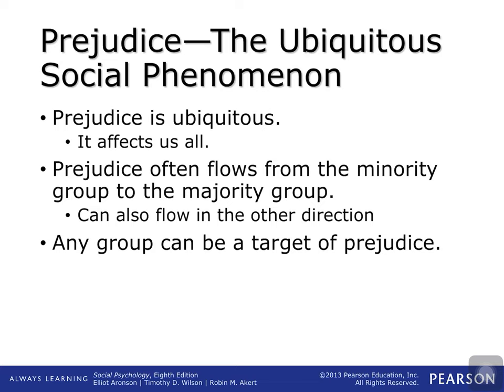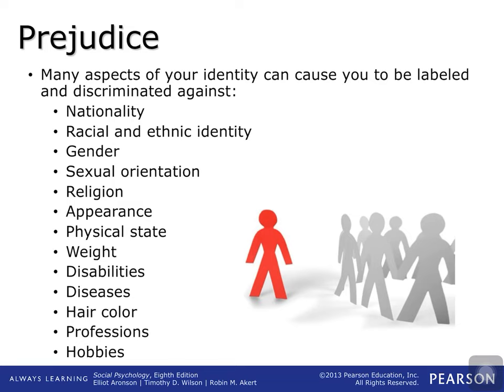Whenever people can be broken up into different groups based on different factors or how a person identifies, that's where we see prejudice creep up — it gives people a way to categorize one another. For example: your nationality, country of origin, race or ethnicity, whether you're male, female, or transgender, or whether you're gay, straight, or anywhere on the sexual orientation spectrum — someone can be prejudiced against you for any of these.